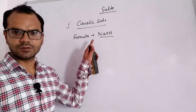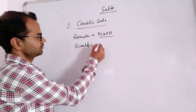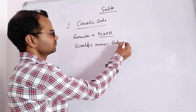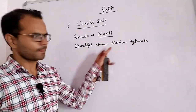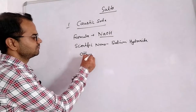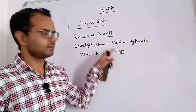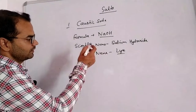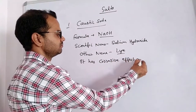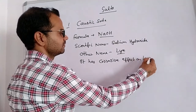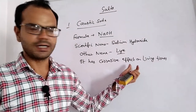Caustic soda's scientific name is sodium hydroxide, NaOH. It has another name — it is also known as lye (L-Y-E). It has a corrosive effect on living tissues.